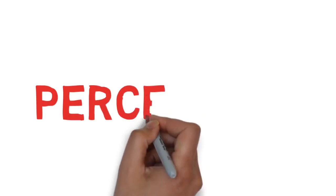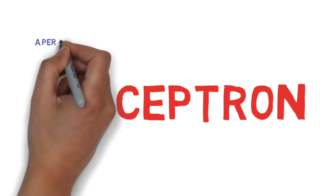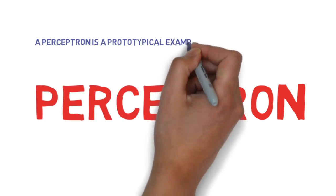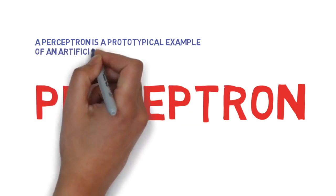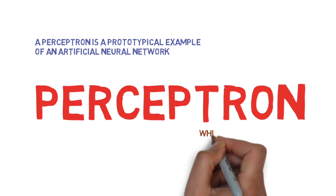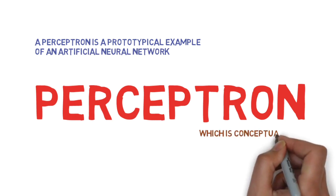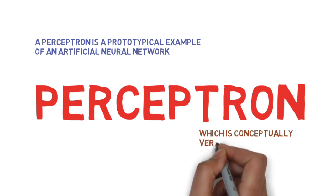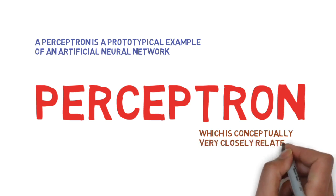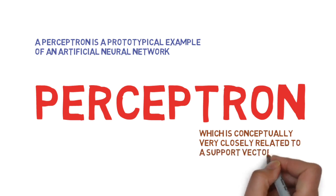Let's learn about the perceptron. As we just said, a perceptron is a prototypical example of an artificial neural network. Now, a perceptron is conceptually very similar and related to the support vector machine's classification approach, which is something that we've already spent some time on.